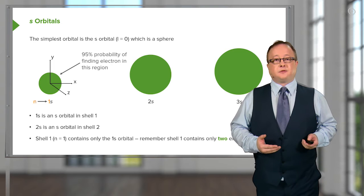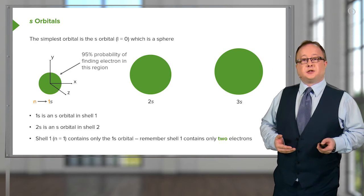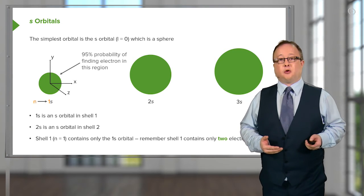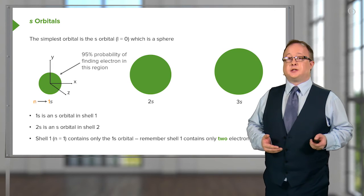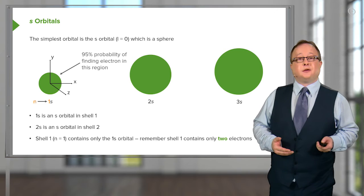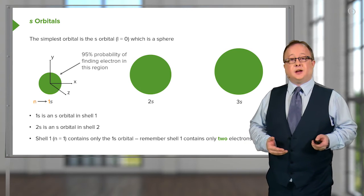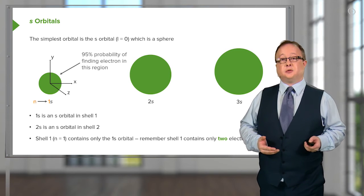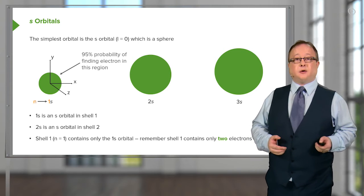So, going from left to right, 1s is an s orbital, which is a spherical orbital, which actually stands for sharp rather than spherical, which is rather counterintuitive. The 2s is an s orbital in shell 2, and the 3s is an s orbital in shell 3.